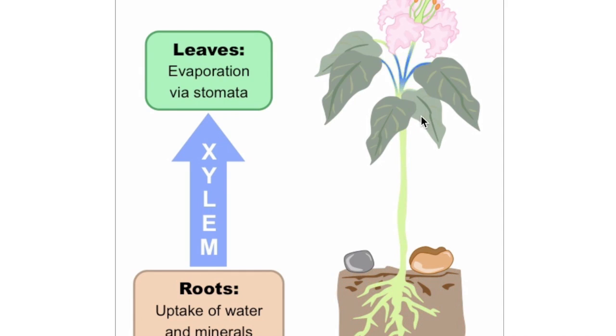Explain the decrease in pressure and transpiration pull that results from evaporation of water from the leaf. Going back to our animation, when water comes out of the leaf through the stoma, it's pulling the water from down. This is called a transpiration pull.